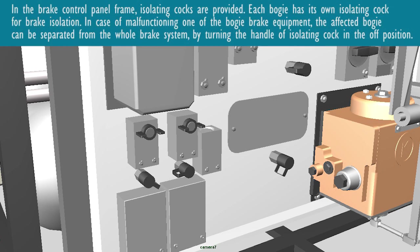Each bogey has its own isolating cock for brake isolation. In case of malfunctioning one of the bogey brake equipment, the affected bogey can be separated from the whole brake system by turning the handle of isolating cock in the off position.